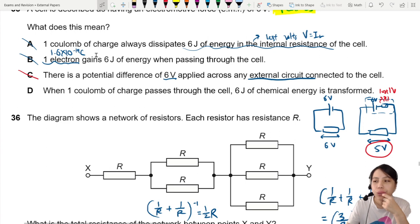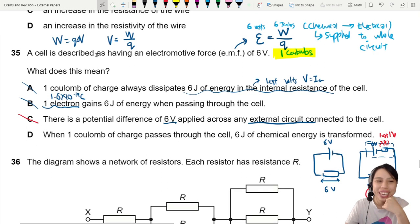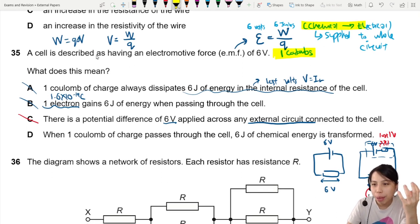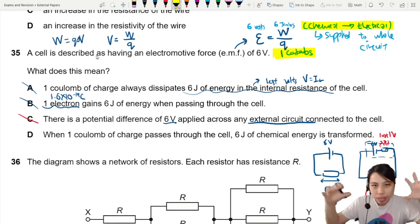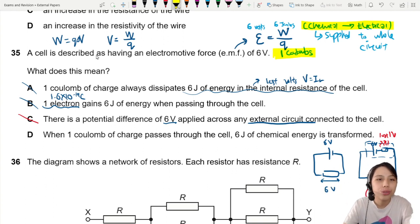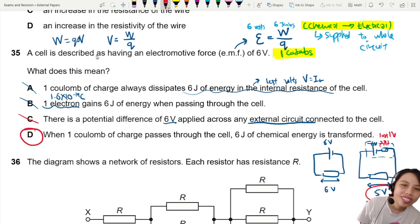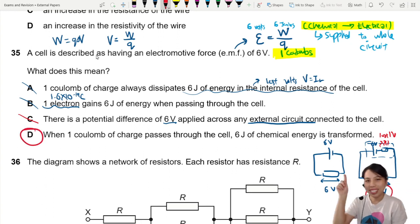That leaves us with D, which says: when a Coulomb of charge passes through the cell, 6 joules of chemical energy is transformed. That is the definition. The charges get energy converted from chemical to electrical — they take one Coulomb of charge and distribute it to the whole circuit. So the best choice here is D. That's all for this video, see you in the next one.